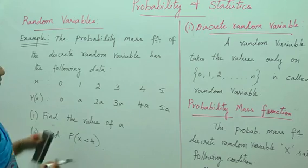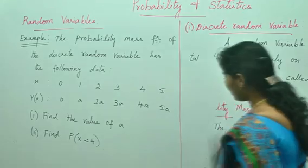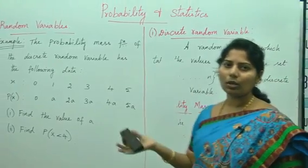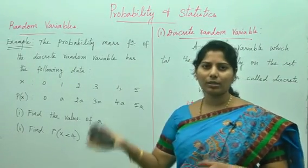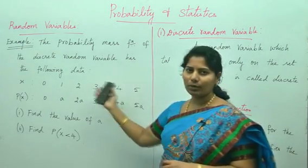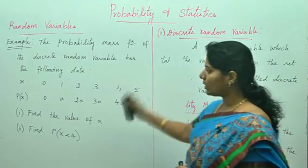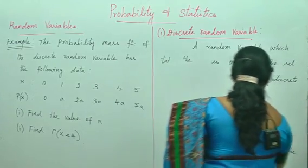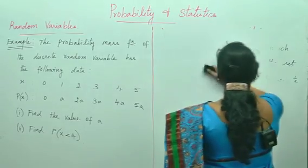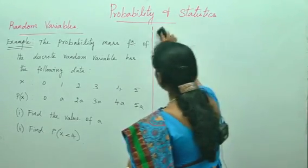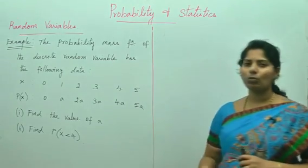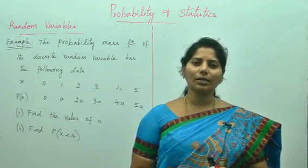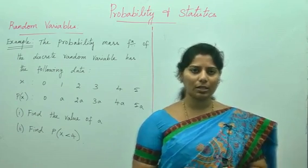To find the value of a, we need to use the conditions of the probability mass function. In the exam they may give more data points, even 10 or 12, but here I am showing 5 to 6 data points. To find the value of a we use condition 2: the summation of p(xi) from i equals 1 to infinity equals 1.